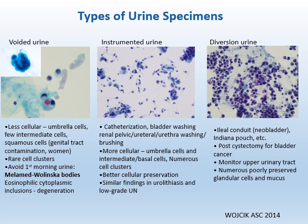Diversion urine is collected from ileal conduit or Indiana pouch, etc. For post-cystectomy patients with bladder cancer, it is used to monitor the upper urinary tract and contains numerous poorly preserved glandular cells and mucus.